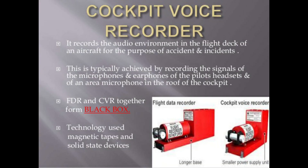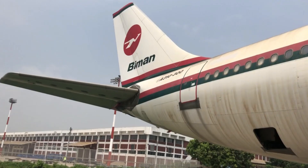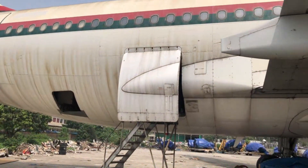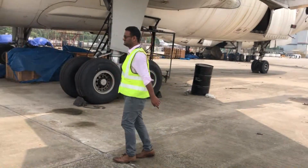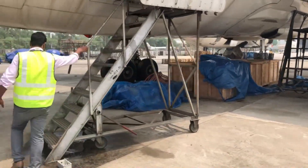As I said, CVR records voice in the cockpit — recorded either on a magnetic tape or a solid state device. Both CVR and DFDR are located in the tail portion of the aircraft. To access them, we open the rear cargo bay. Let's see how it looks in the video — this is the rear cargo bay.